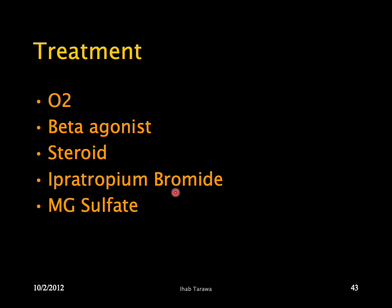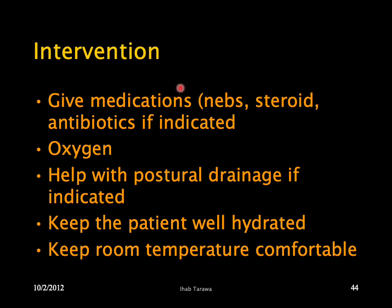General management of asthma: if hypoxic, treat with oxygen. Give beta-agonists to dilate the bronchi, steroids to reduce inflammatory edema, and ipratropium to augment bronchodilation. Magnesium sulfate helps relax the airway in some patients. If infection is present, give antibiotics. Administer medications via nebulizer, give steroids and antibiotics if indicated, provide oxygen, assist with postural drainage if indicated, keep the patient well hydrated, and keep room temperature comfortable.